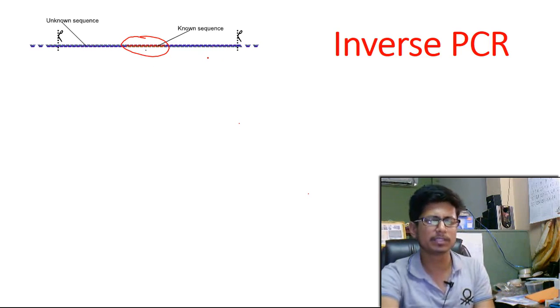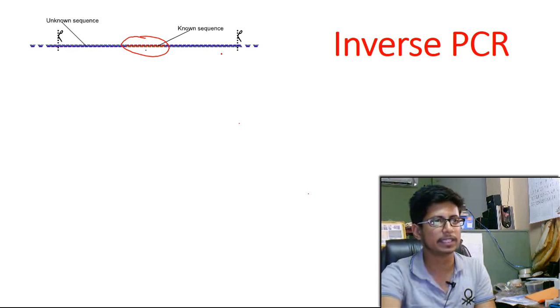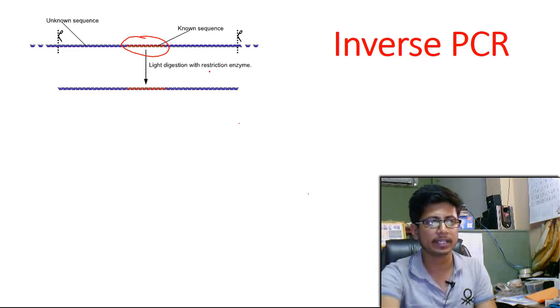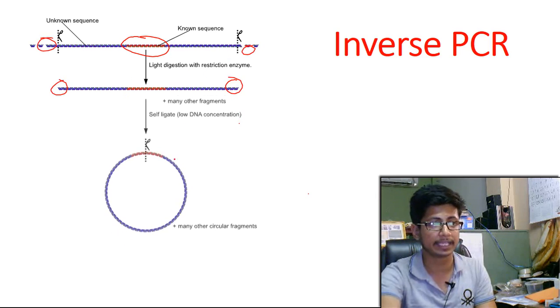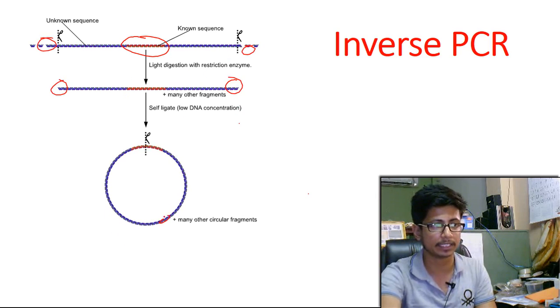So what we do? We do a milder treatment with exonuclease enzymes that will cleave this DNA from the terminal regions and generate overhang. We can also use restriction enzymes for that. Once the overhang is generated then what we want to do? We want to ligate both the end of the target DNA. Both the end of this DNA strands should be ligated properly. So let's say here they are ligated.